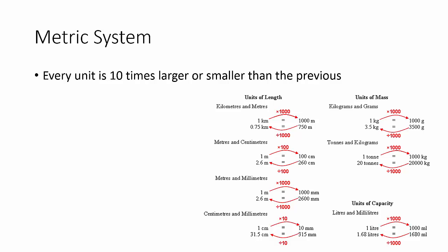The metric system is used worldwide. The premise is every unit is ten times that of the previous. So if you want to go from one unit to another and the units are sequential, you multiply by ten or divide by ten. If they're not sequential and there's another unit in between, then you multiply by a hundred or a thousand, or whatever you need to get from one unit to the other.